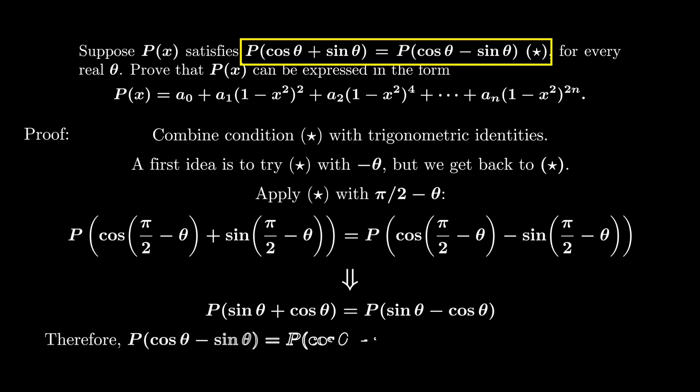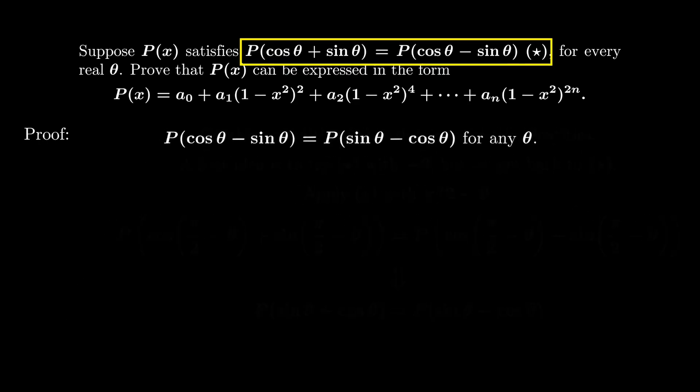Now if we compare this condition with the original equation, we get P(cos θ - sin θ) = P(sin θ - cos θ) for any θ.